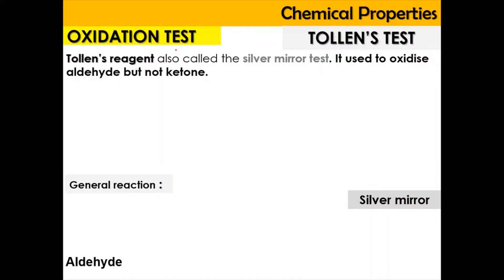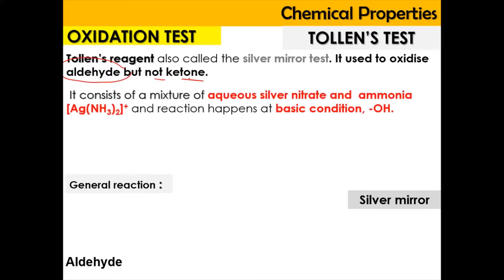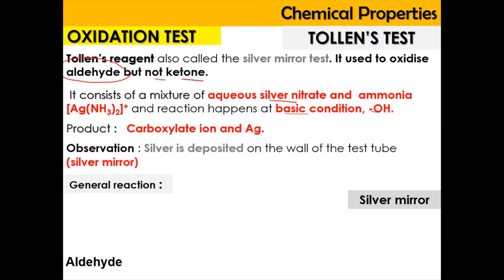Next, we're going to look into the oxidation test. For the oxidation test, we have the Tollens test, also known as the silver mirror test, where it is used to oxidize aldehyde but not ketone. The Tollens reagent includes aqueous silver nitrate and ammonia, which is [Ag(NH3)2]+, and the reaction happens at basic condition. The product of the reaction of aldehyde with aqueous silver nitrate and ammonia will be carboxylate ion and silver metal. By the end of the reaction, we see silver deposited on the wall of the test tube — the silver mirror.